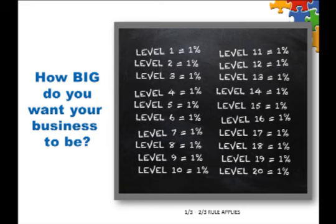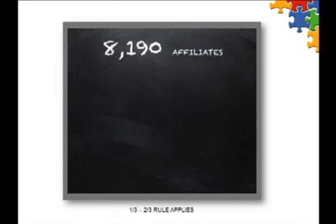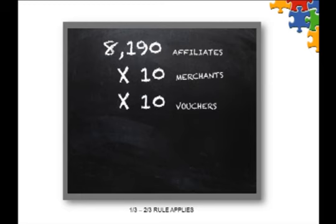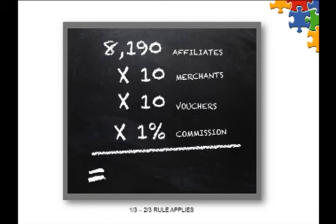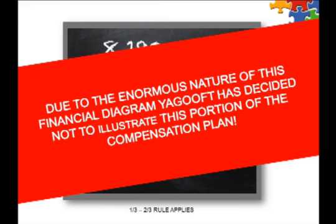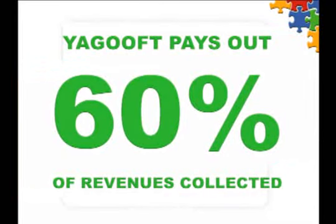So the question is, how big do you want your business to be? If you built your team for one year and it duplicated properly, you could have 8,190 affiliates on your team. And if each of your affiliates enrolled 10 merchants, and each merchant sold 10 vouchers per month, and you only earned 1% on each voucher sold — you do the math. Ugoof pays out over 60% of everything we collect. Imagine what it would be like if the world earned 60% of everything Facebook or Groupon takes in. With us, our advertising affiliates own 60% of our revenues.